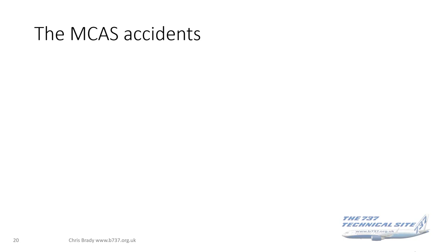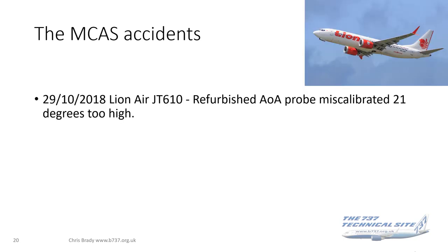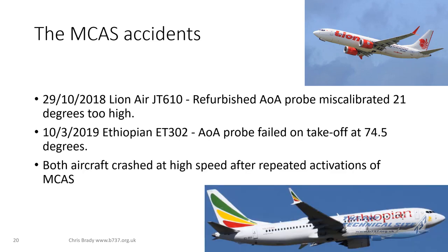Let's recap the MCAS accidents. The first was in October 2018, the Lion Air flight. A refurbished AOA probe was fitted to the aircraft, but it was miscalibrated 21 degrees too high. In the second accident, the Ethiopian one in March 2019, the alpha probe failed on takeoff at about 74 degrees. Both aircraft subsequently crashed at high speed after repeated activations of MCAS.